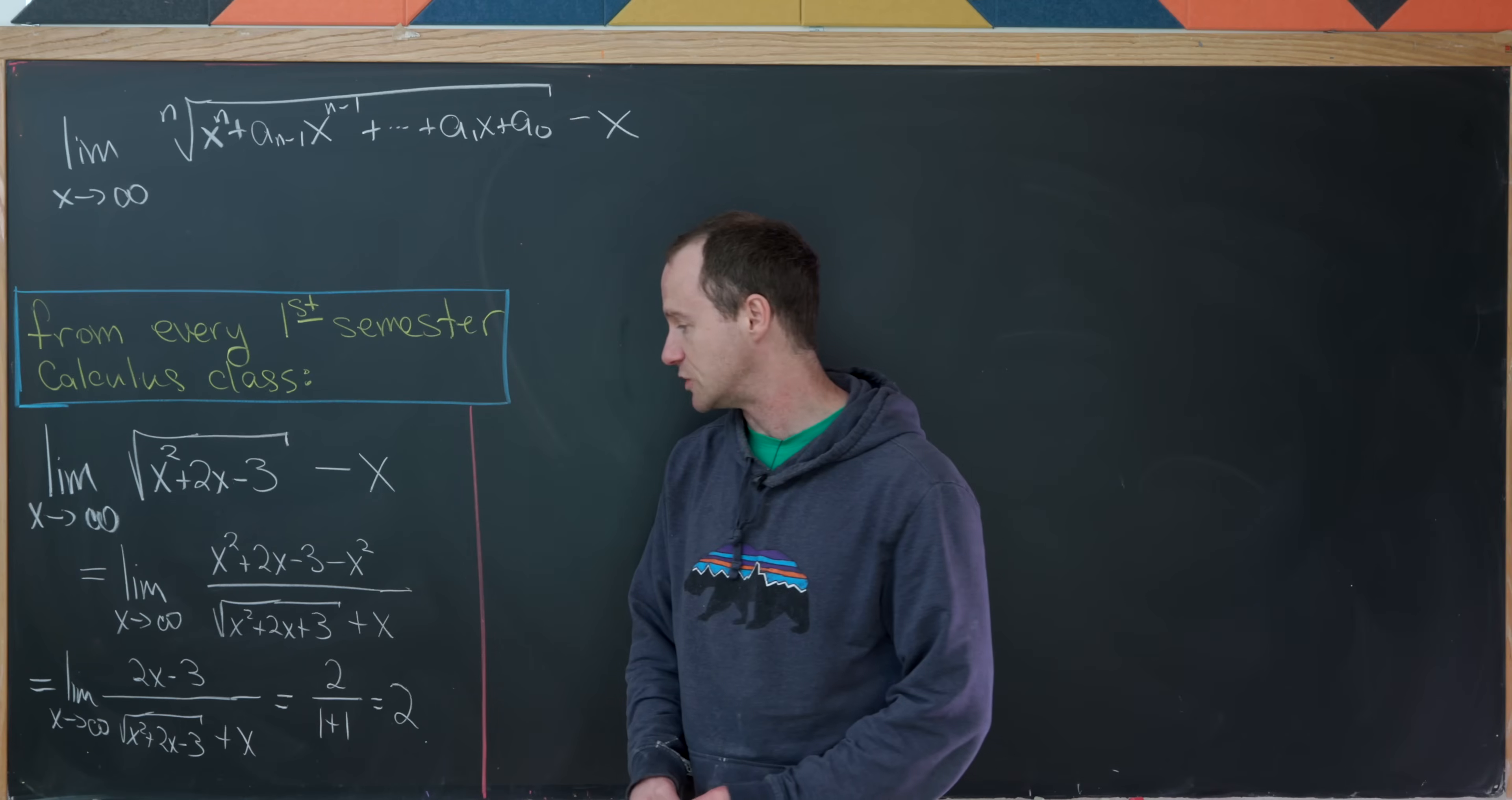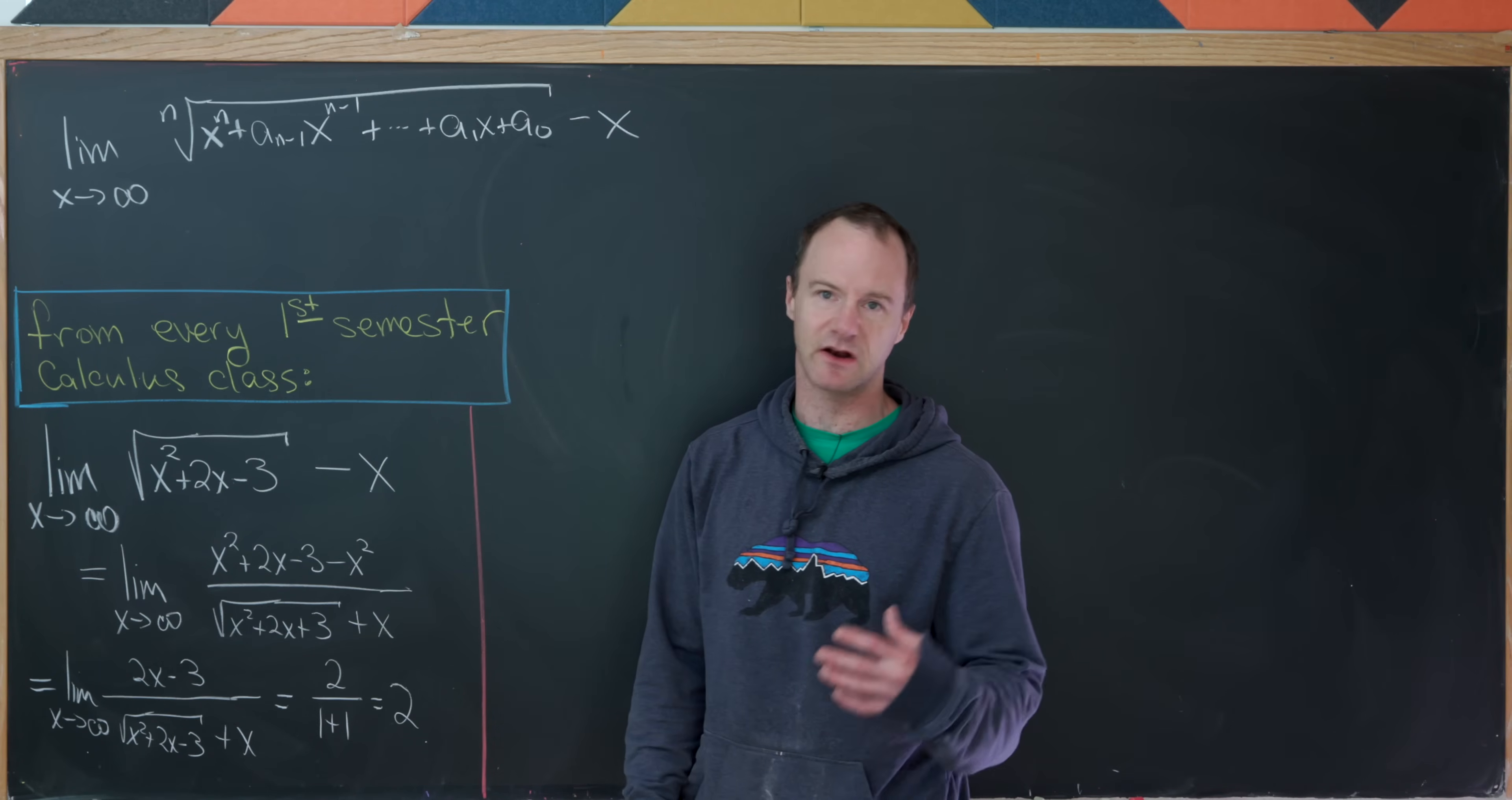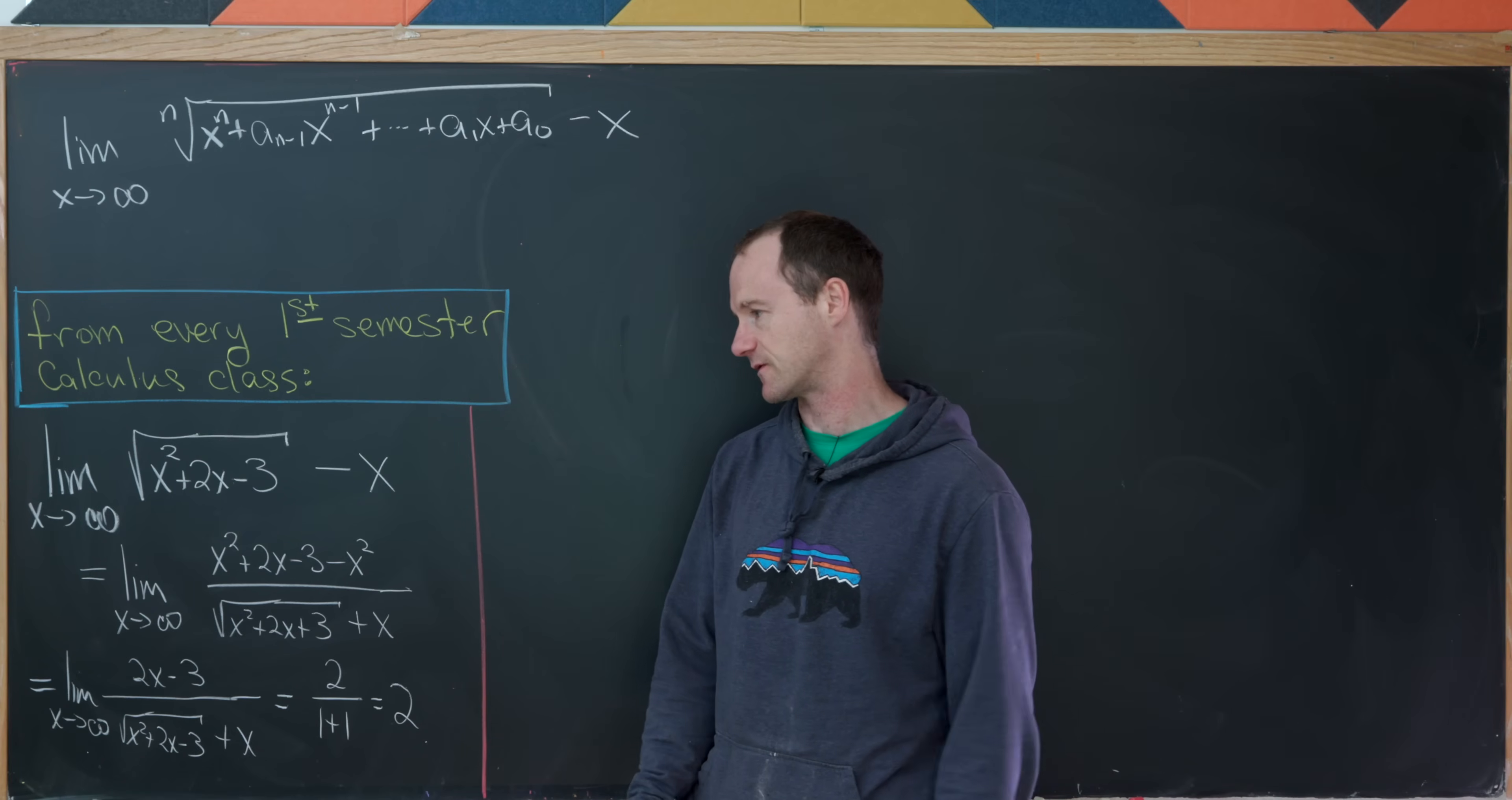And then notice that the leading terms in the numerator and the denominator are both x to the first terms. I've got this free x to the first here, and then inside of the square root I've got an x squared which is acting like x to the first.